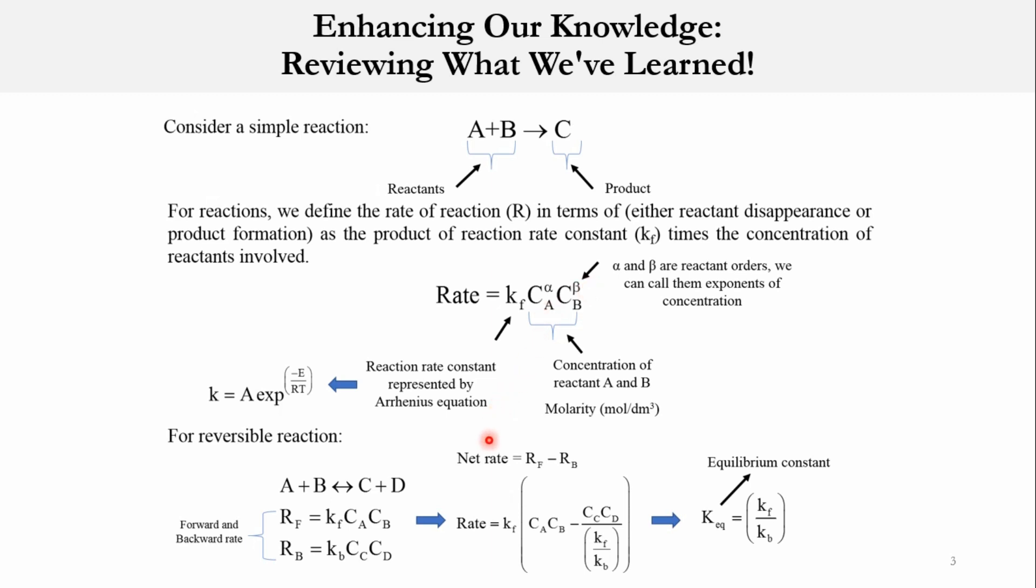In case of reversible systems, we say rate of forward reaction minus rate of reverse reaction. Accordingly, we derive the equation: rate = kf·CA·CB - (CC·CD/Keq), where RF is the rate of forward reaction and RB is the rate of reverse reaction. So this is the previous concept which we have learned specifically in our chapter number 3.